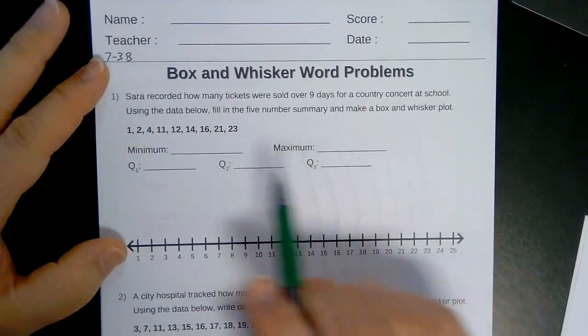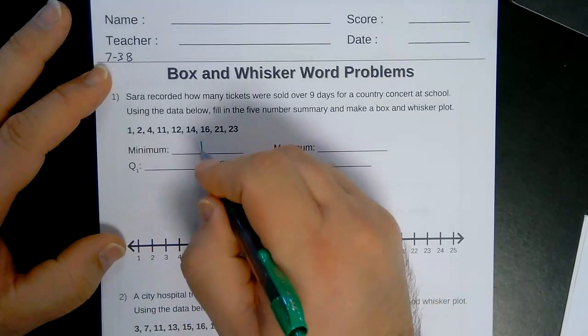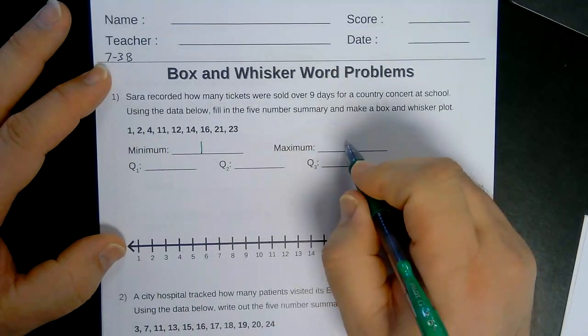Okay, so that's very similar to what we were doing before. The numbers are in order, which makes it very nice. The minimum is 1, the maximum is 23.